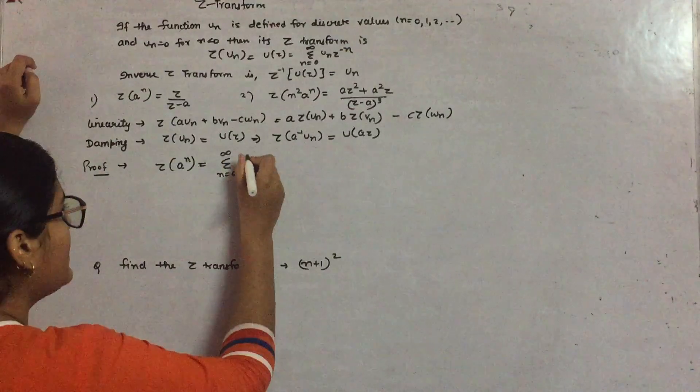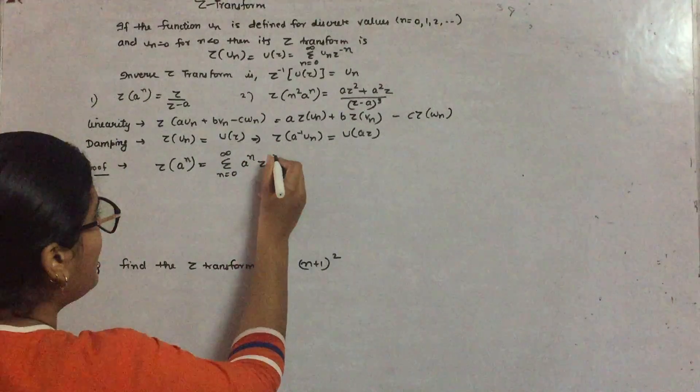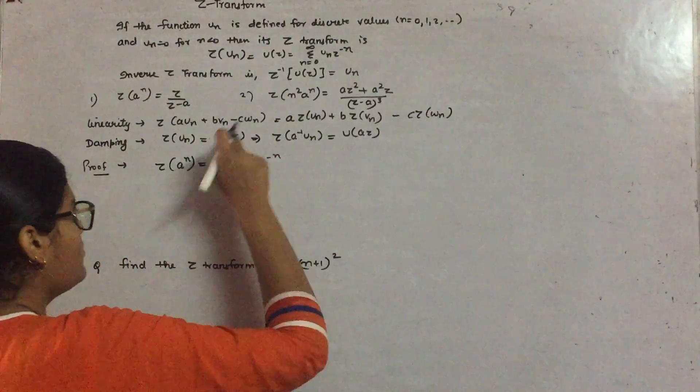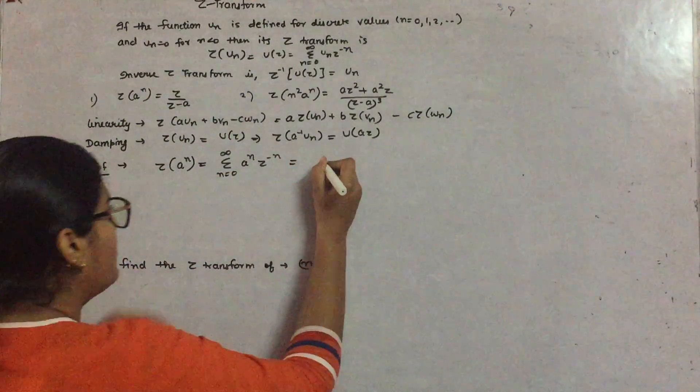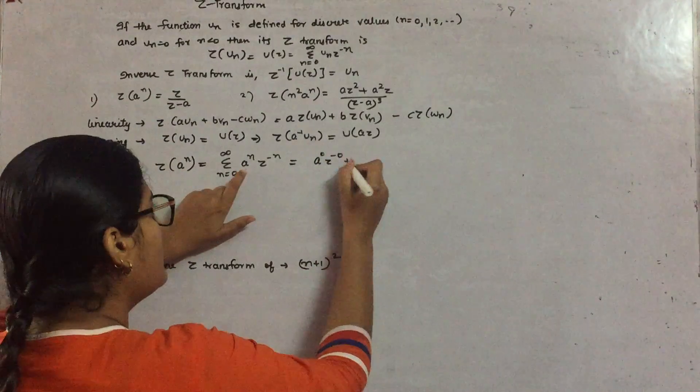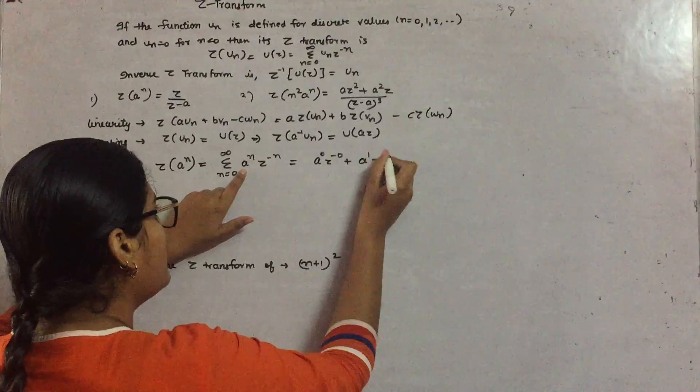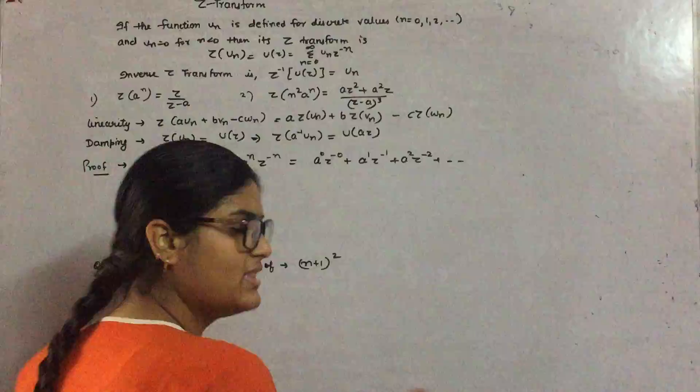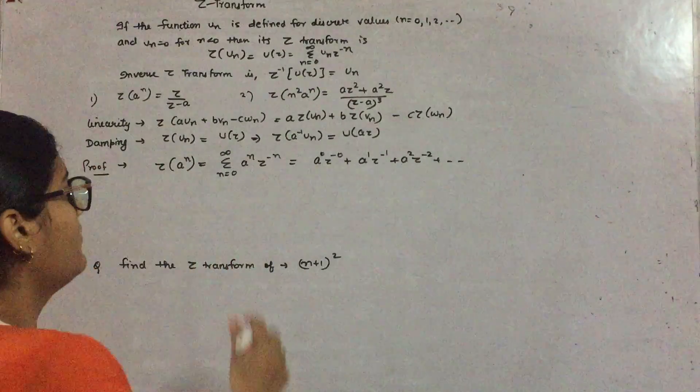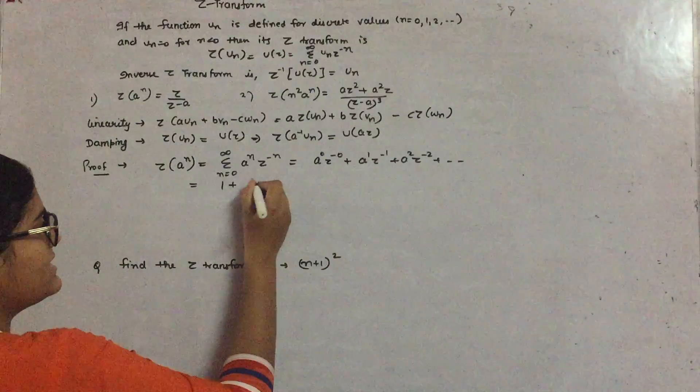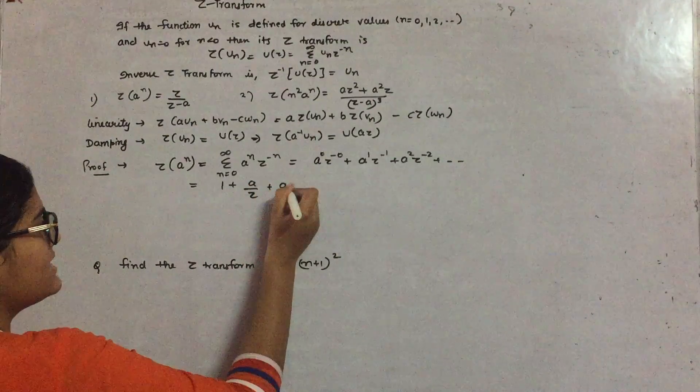Now if you substitute the value from 0 to infinity one by one, firstly let us suppose n is 0, so a^0, then 1, then 2, and so on. This is an infinite series. How can we evaluate it? This is 1, a/z, (a/z)^2, and so on.